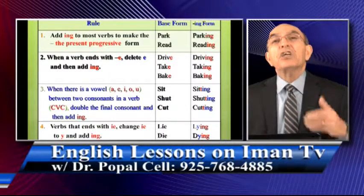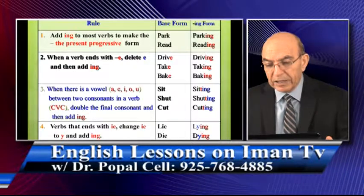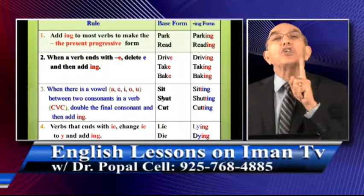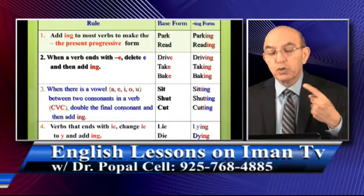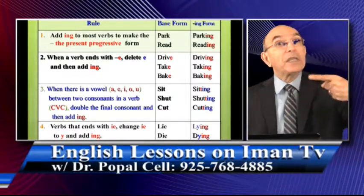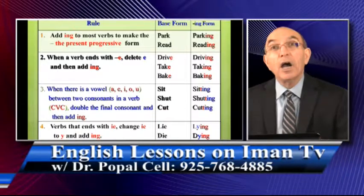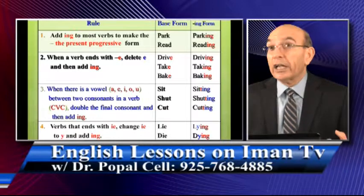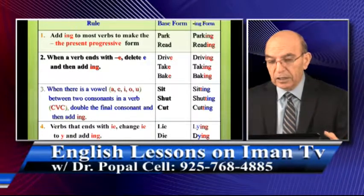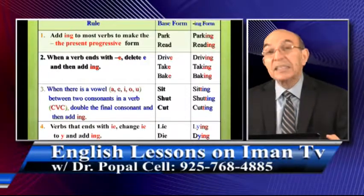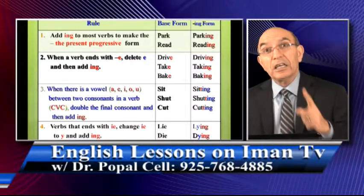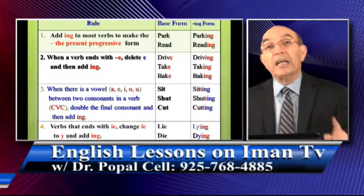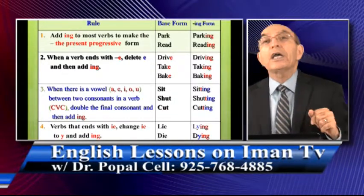The same thing with 'shut' — 'shutting.' Although there are two letters S and H, 'sh' makes one single sound. So you have 'u,' a vowel, and then 't,' a consonant — you make it 'shutting,' double 't.' And 'cut' — C-U-T — the 'u' is a vowel, so it is CVC. You put double 't': 'cutting.' It's a very important rule, please follow it.